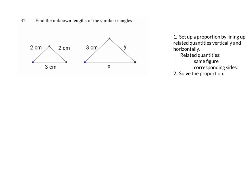Okay, last problem we have is find the unknown length of these similar triangles. We want to set up a proportion by lining up related quantities vertically and horizontally. Our related quantities are the same figure or corresponding sides. And finally, we want to solve the proportion.